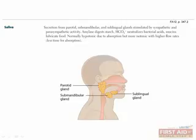Saliva has many important functions. First, alpha amylase begins starch digestion. This enzyme is inactivated by the low gastric pH, so carbohydrate digestion continues later in the small intestine. Bicarbonate in saliva neutralizes acid produced by oral bacteria, helping to maintain dental health. Mucins in saliva help to lubricate food for passage in the esophagus, and there are also antibacterial secretory products and growth factors that promote epithelial renewal.